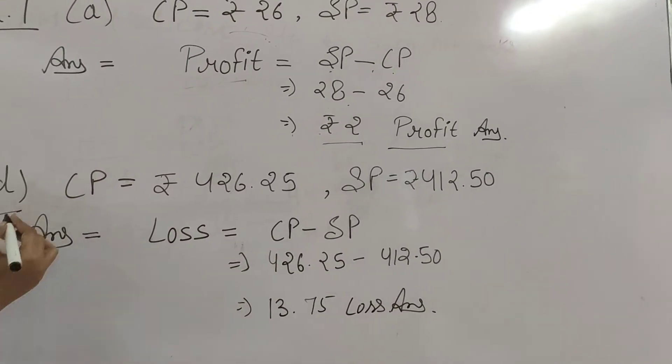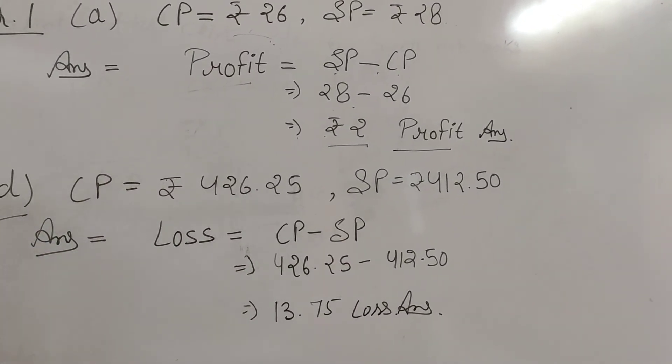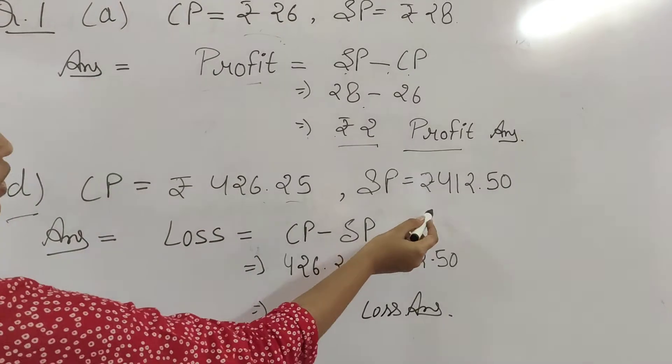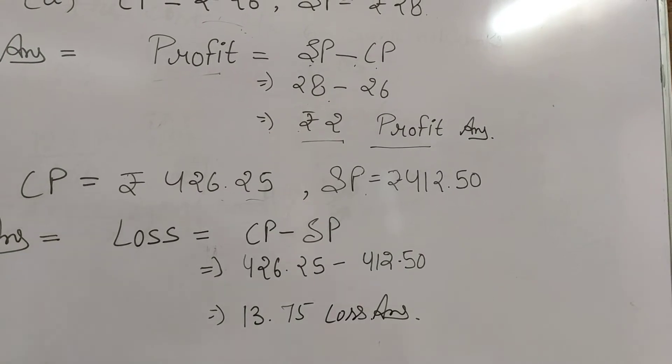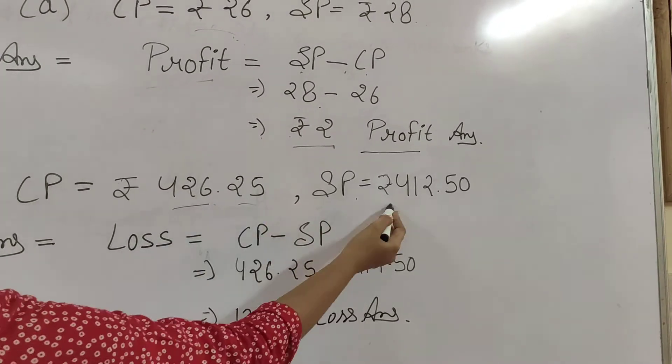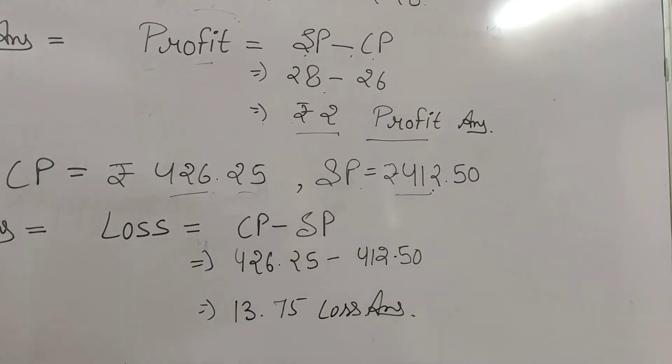Next question B: CP is given as ₹426.25 and SP is given as ₹412.50. What happened here? CP is ₹426 and SP is ₹412, so SP is less than CP.